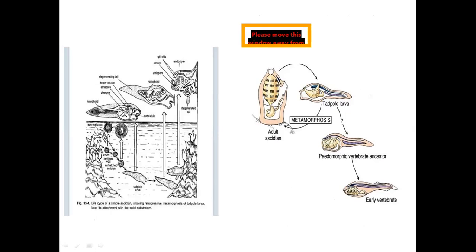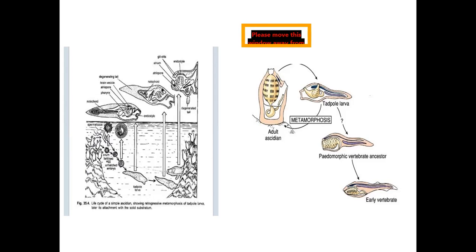All tunicates are exclusively marine forms in the water body. Once fertilization occurs — external fertilization — a zygote is formed, and this zygote undergoes cleavage forming the tadpole larva. This tadpole larva swims and is positively geotactic and negatively phototactic. It moves to the bottom level where there is a substratum, attaches to it, and during this process there are retrogressive changes and also some progressive changes that make it a sedentary adult.